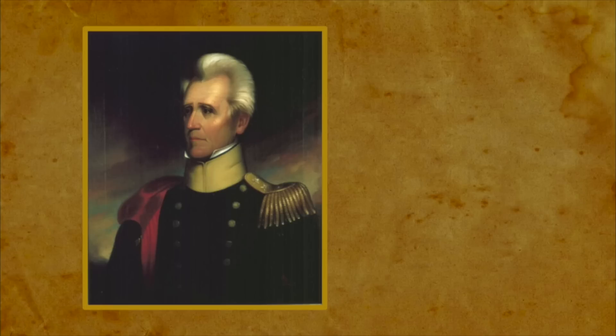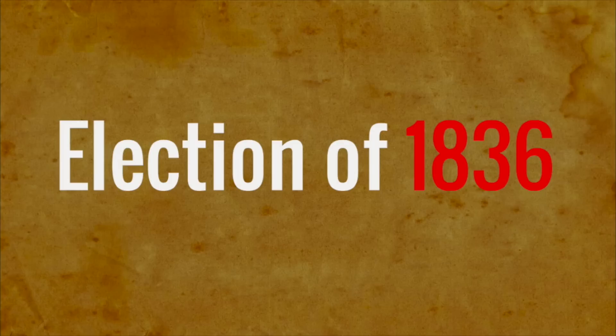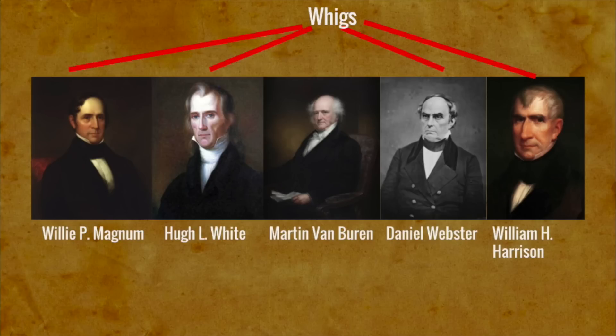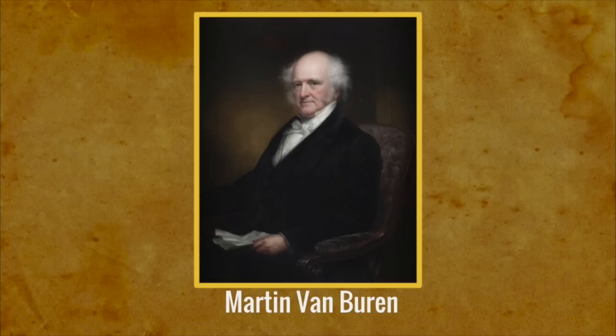As Jackson left office, the Whigs and Democrats would compete in the election of 1836. The Whigs had a somewhat flawed idea of how to approach the election — they decided to have four candidates, and hoped that one would defeat the Democrat nominee, Martin Van Buren. Obviously, this wasn't an amazing idea, and Van Buren won the election by a wide margin.